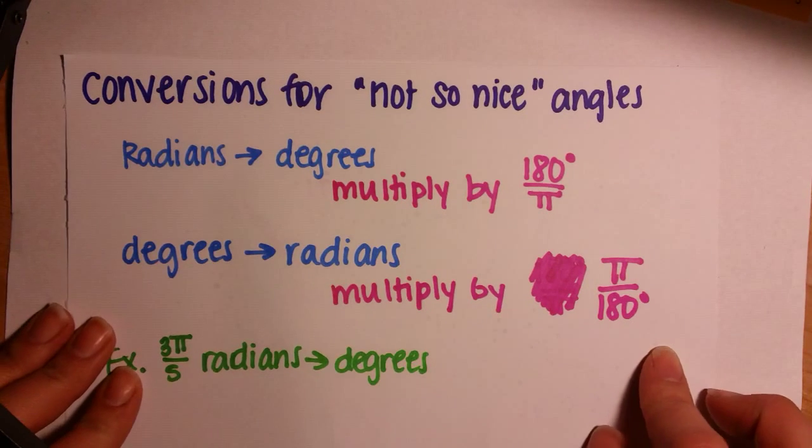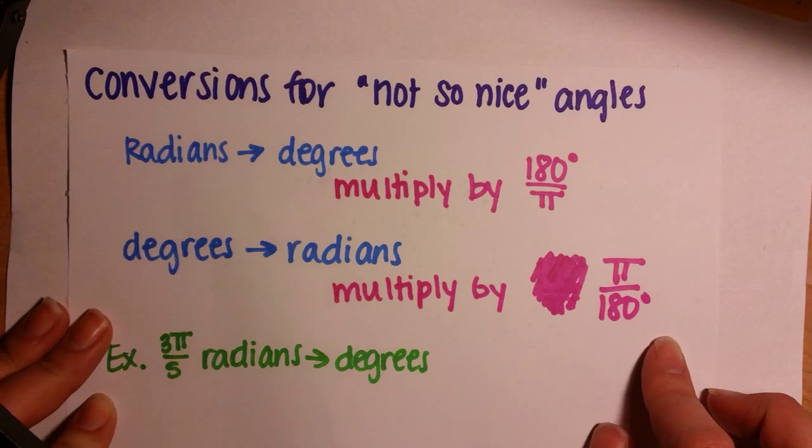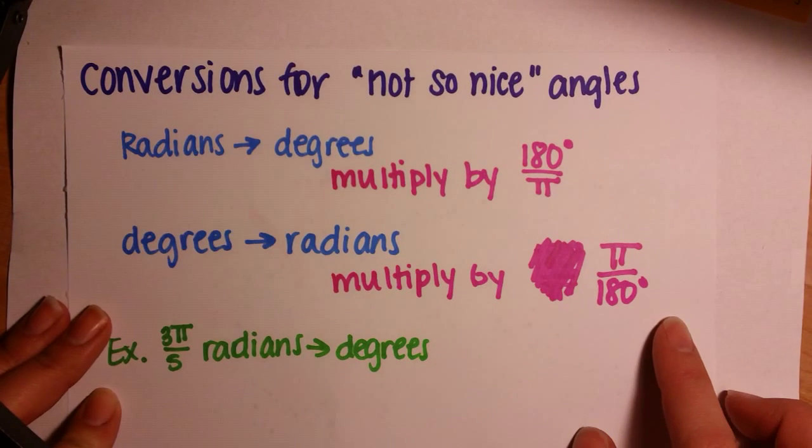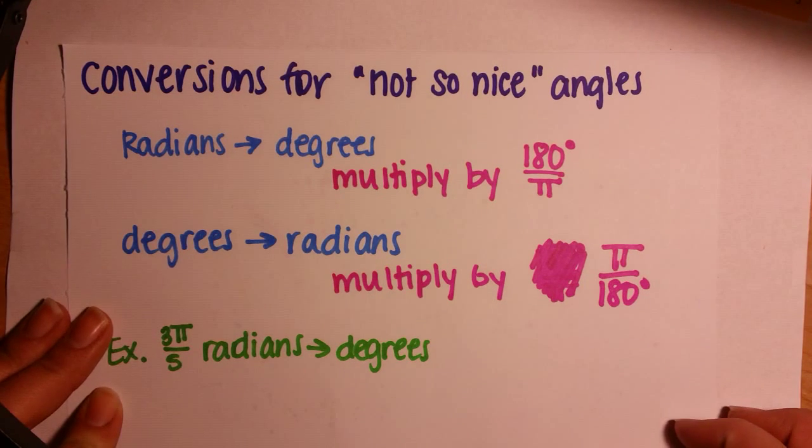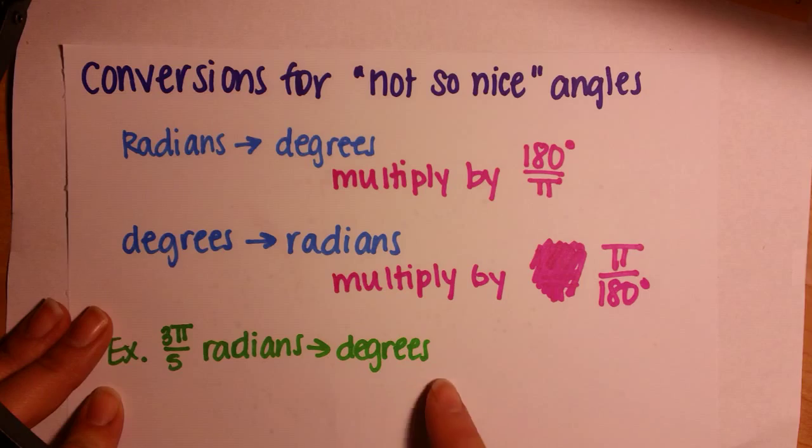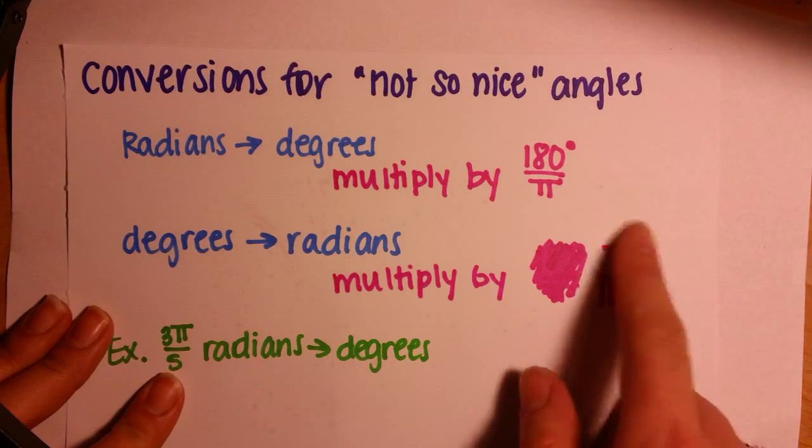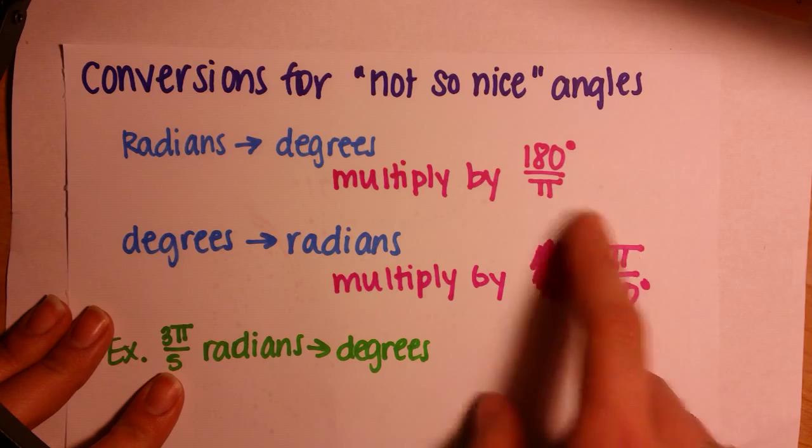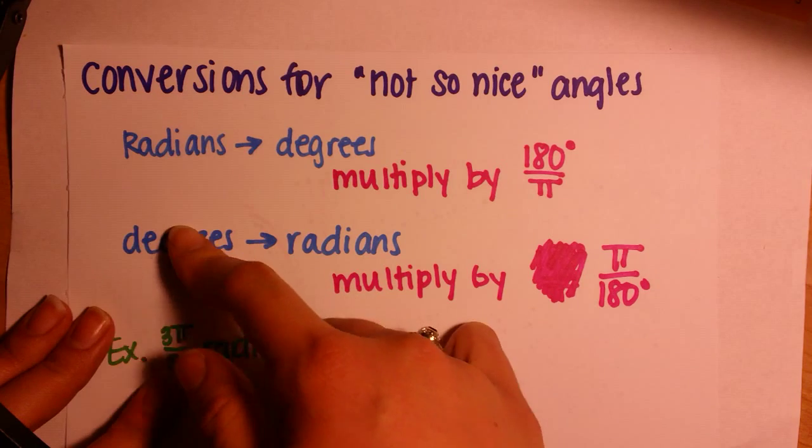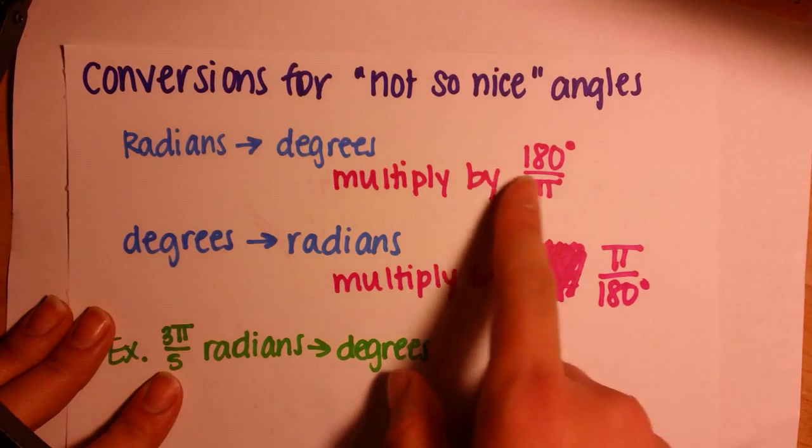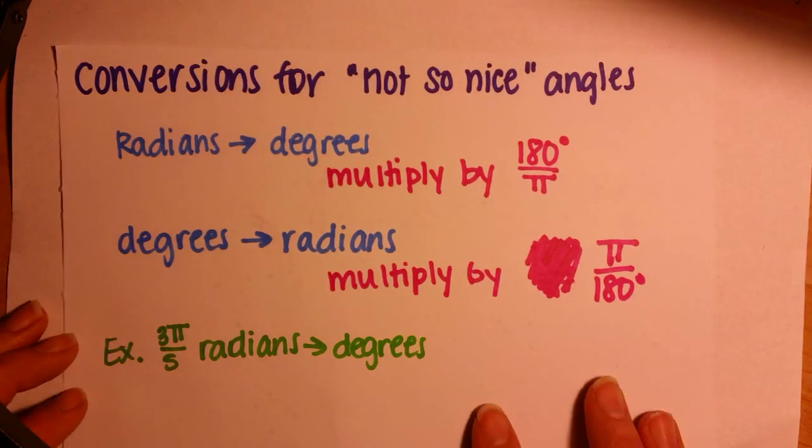Now we need some conversions for some not-so-nice angles. To go from radians to degrees, we'll multiply by 180 over π. For degrees to radians, we'll multiply by π over 180. An easy way to remember this conversion is that radians have π in it, so you're going to want π in your numerator. To go from radians into degrees, you want to get rid of the π. Radians will be π over something, so to get the π to cancel, you have 180 over π.